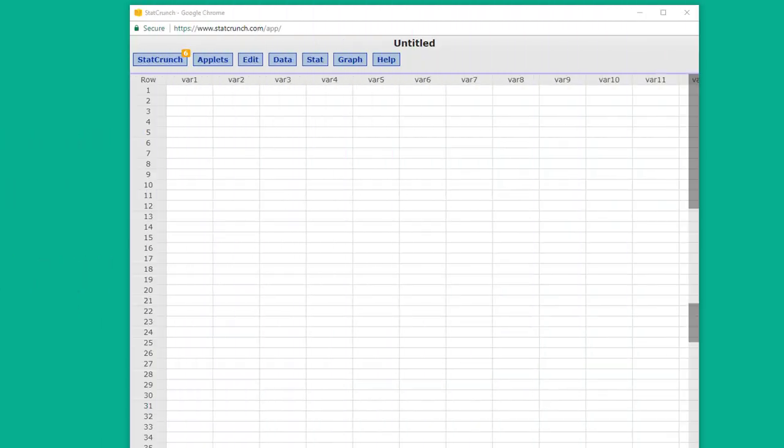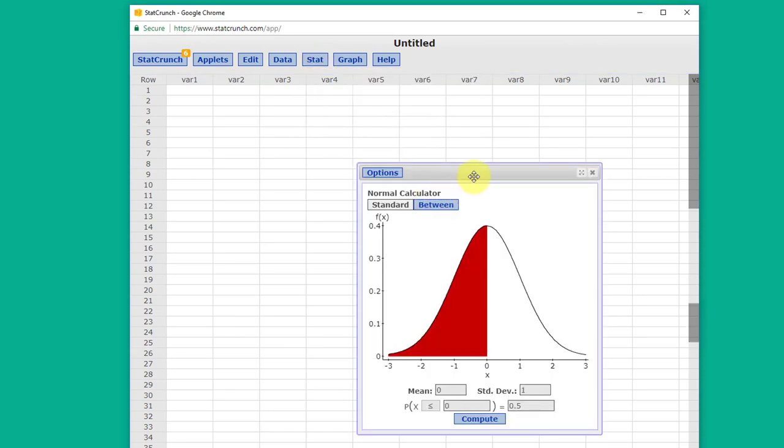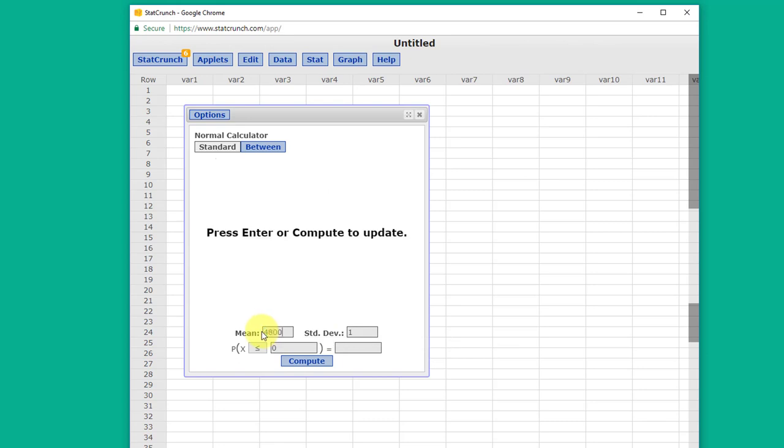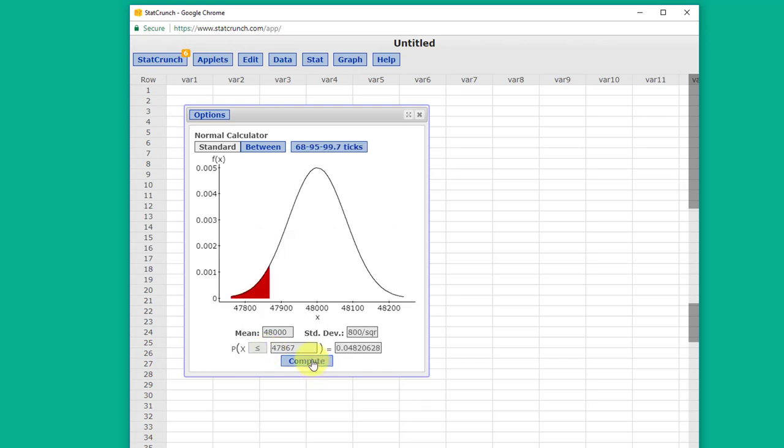Let's go do that now. I have StatCrunch open here. We go to the path stat, calculators, normal to bring up a normal distribution calculator. Recall that it comes up in the standard normal distribution, which has a mean of zero and a standard deviation of one. We're going to work with the population mean of 48,000, and because we're working with the sample, first we need to take the sigma, which was 800, and we're going to divide that by the square root sqrt open 100 for our sample size, and then we put in our x bar of 47,867, and we click compute. It gives us an area under the curve, the probability we're looking for, of 0.048, which is approximately 0.05.